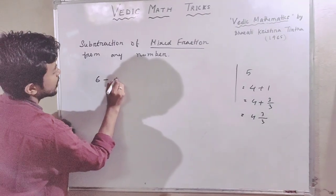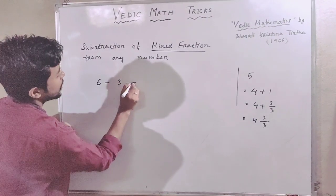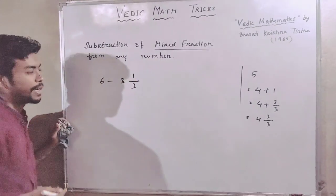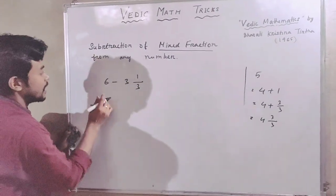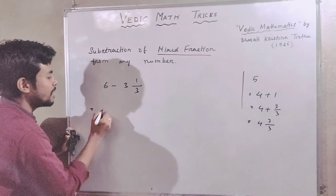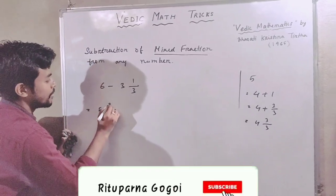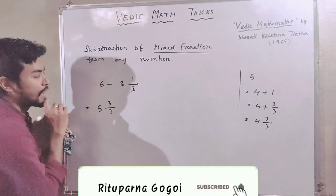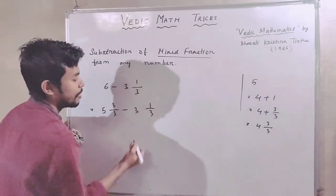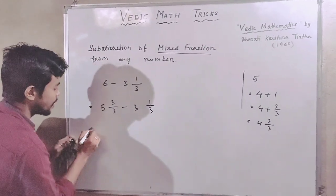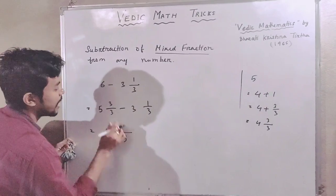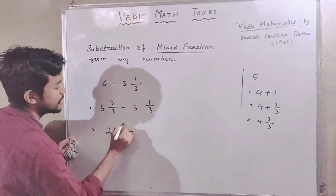We can negate 6 minus 3, giving 1 by 3. We can negate 6; we can negate 5 and 3 by 3. Minus 3 and 1 by 3. We can negate 5 minus 3 equals 2, and 3 minus 1 equals 2.